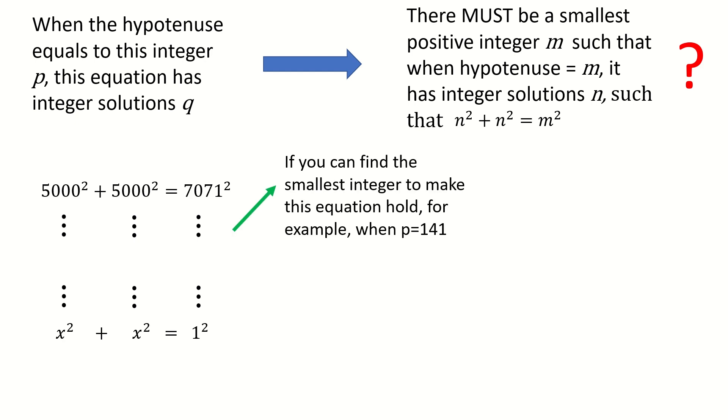First, if we can find the smallest integer to make this equation hold—for example, you found p equals 141, this equation still holds for some integer. In this case, the smallest positive integer for m is equal to 141.